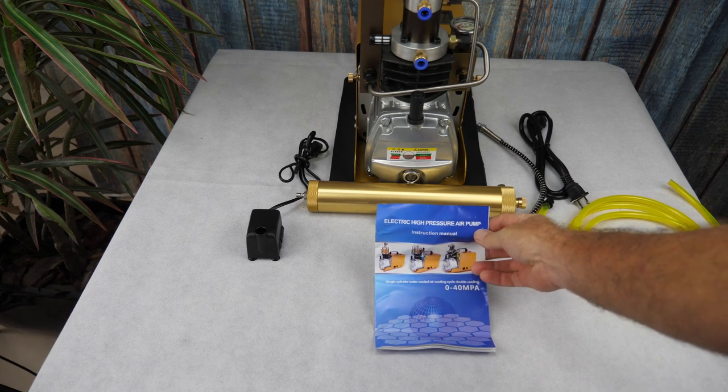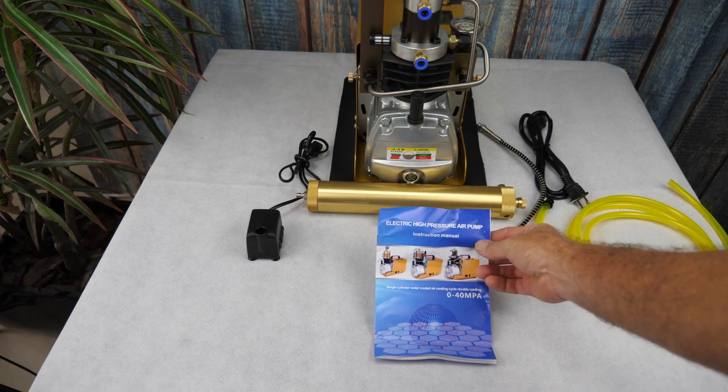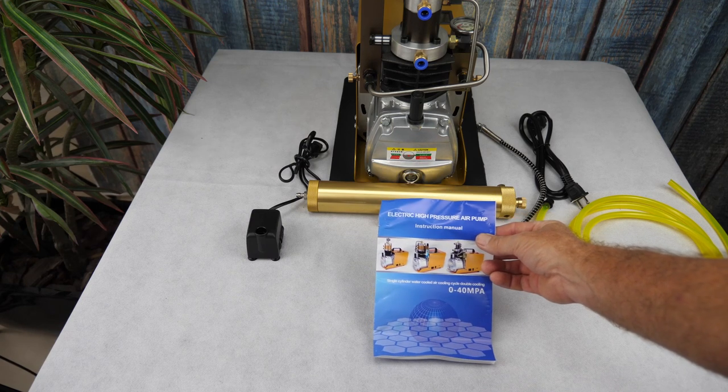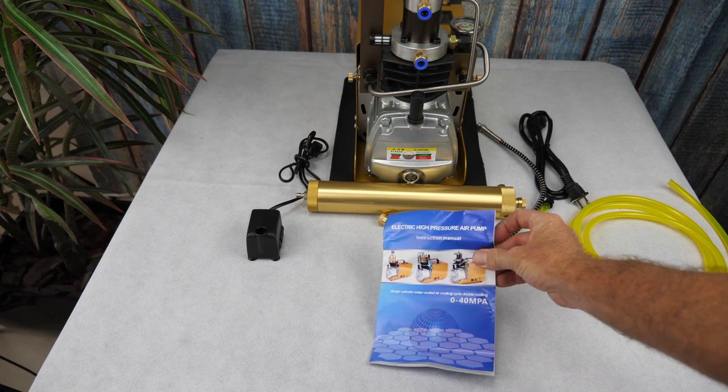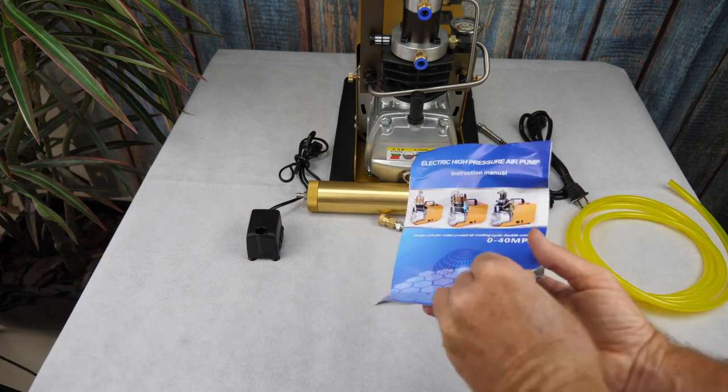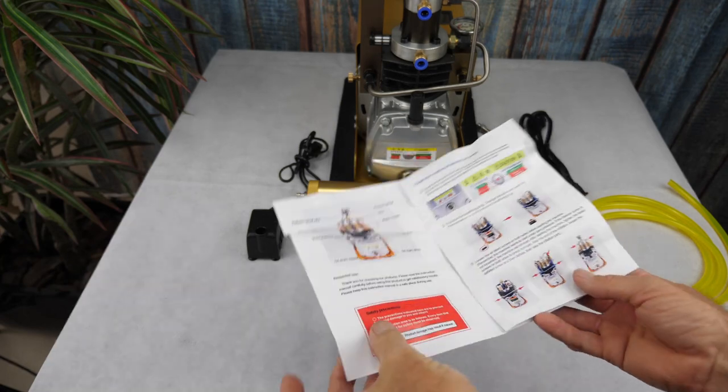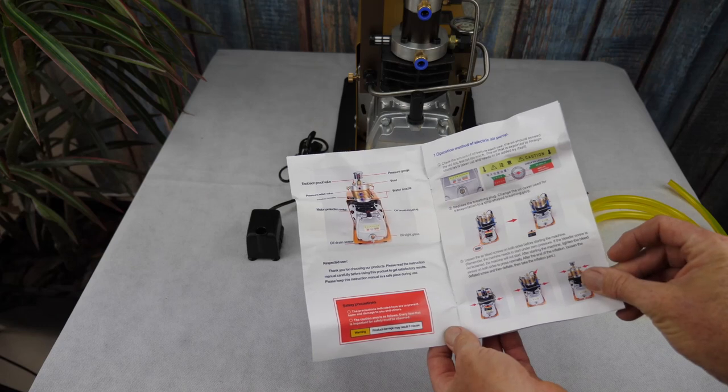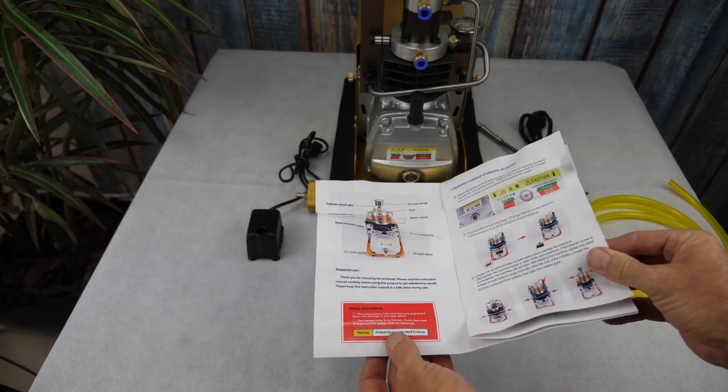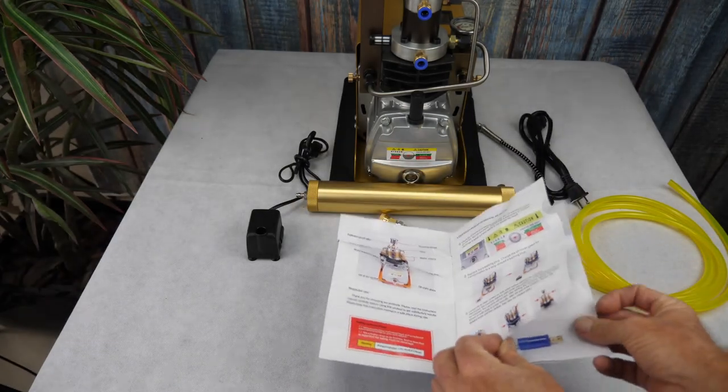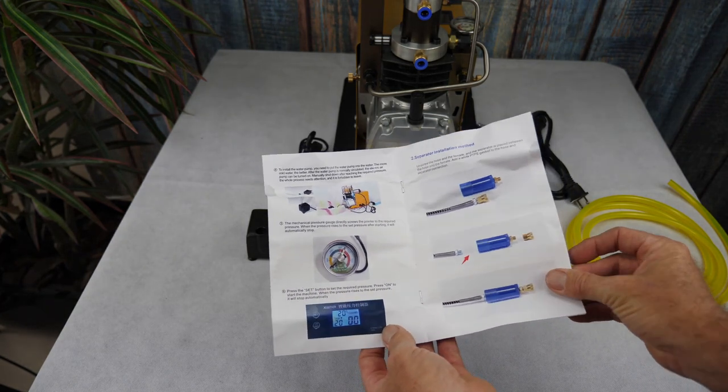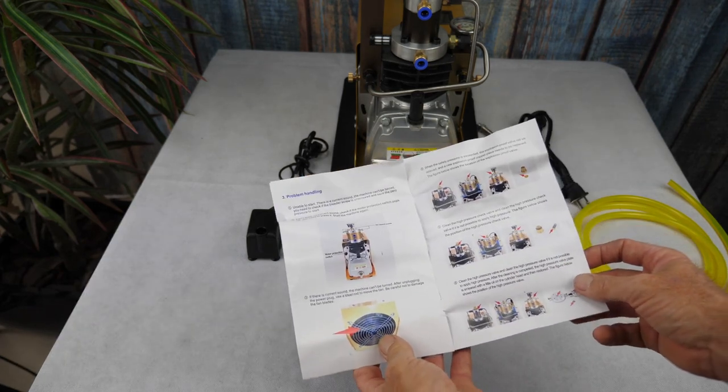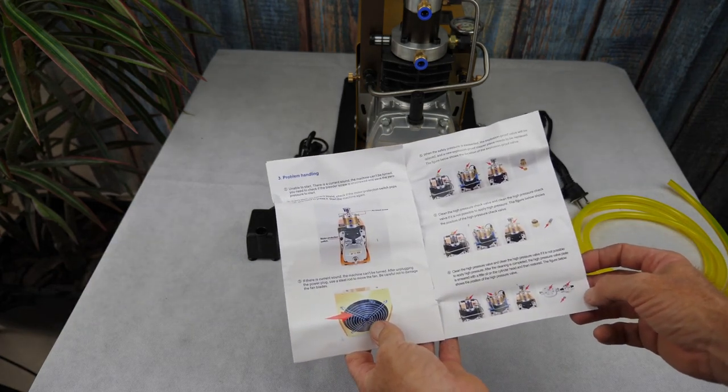The instruction manual that comes with it is, at best, laughable. Well, it's a pathetic instruction manual, but there is some useful information in there. It doesn't even show this compressor. It shows a different one, but they all kind of work the same. There's useful information, some basic get you started type things. But, it is lacking. Very lacking. That's okay. We can figure this out.